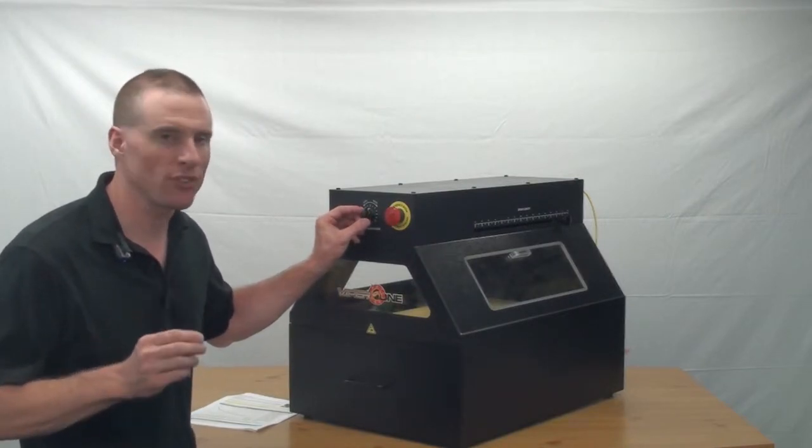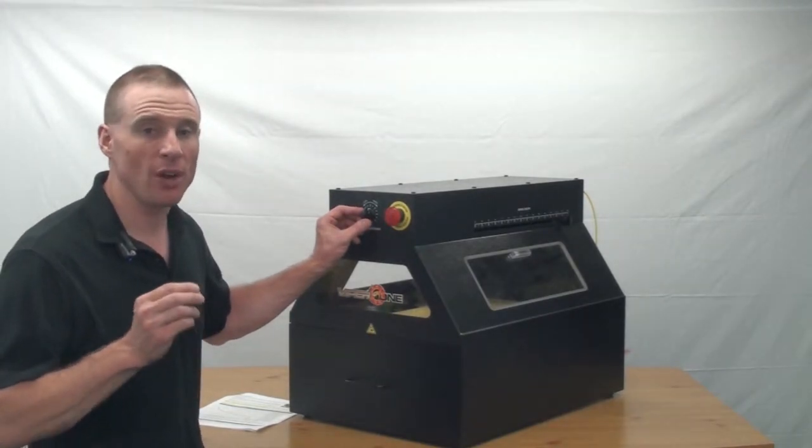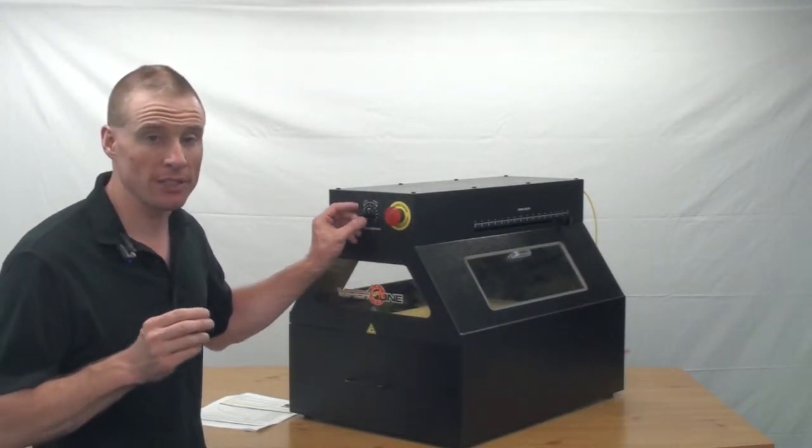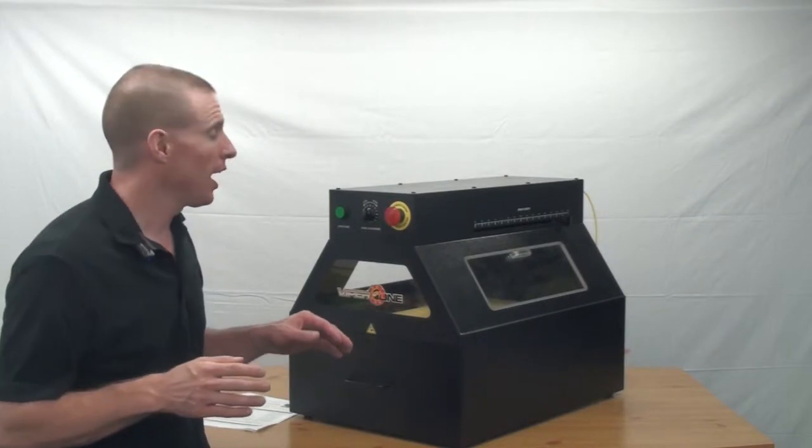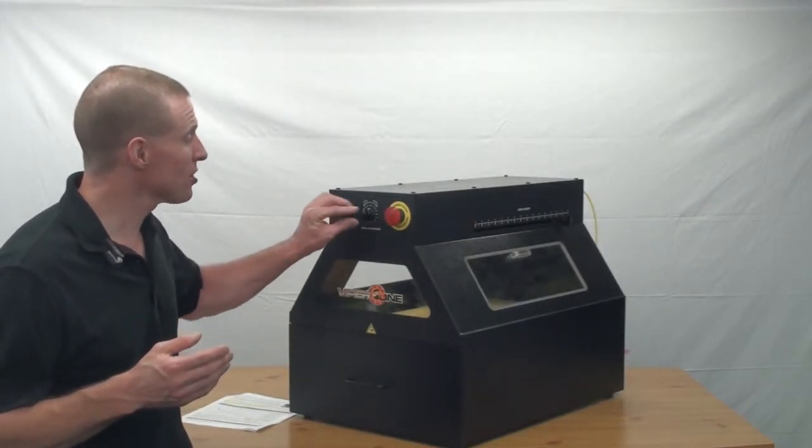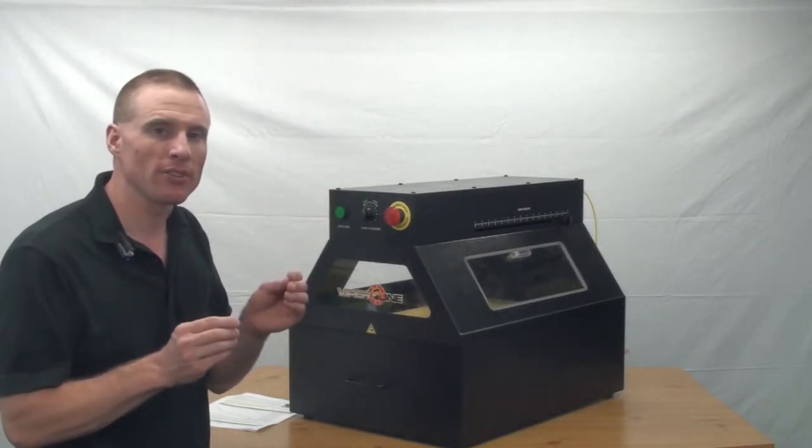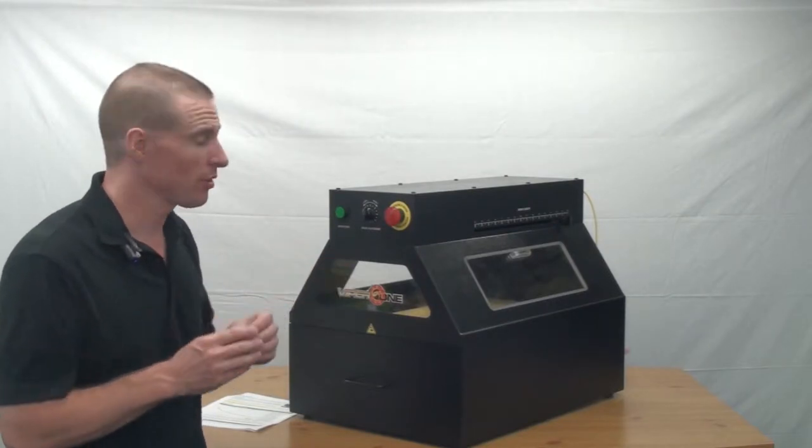When you start hitting that resistance, you don't want to over-tighten this knob. That can actually over-tighten the valve and completely shut everything off. When you home it at that position, basically that is your zero out position. That's right when you hit a little bit of resistance.